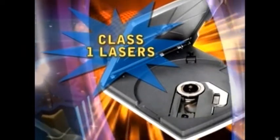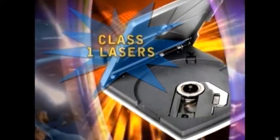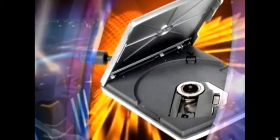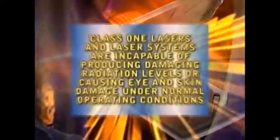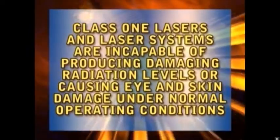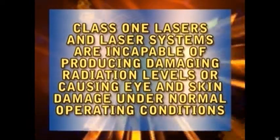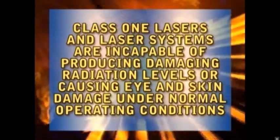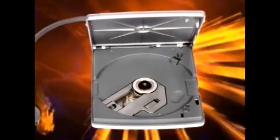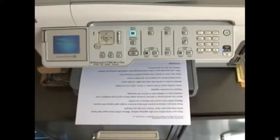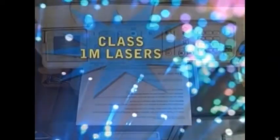Class 1 lasers are low power lasers and laser systems that cannot emit radiation levels greater than the maximum permissible exposure. Class 1 lasers and laser systems are incapable of producing damaging radiation levels or causing eye and skin damage under normal operating conditions. Examples of this type of laser are those lasers used in compact disc players and laser printers. These lasers are exempt from any control measures.